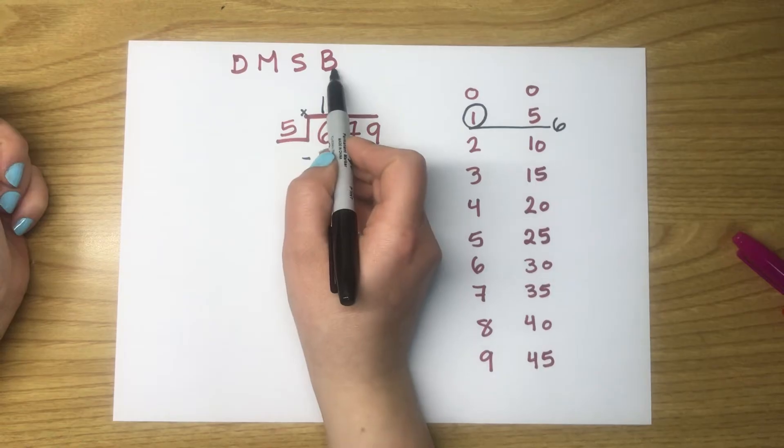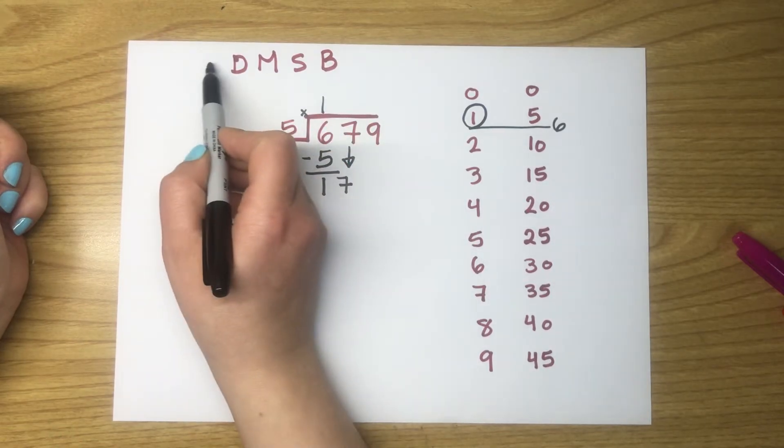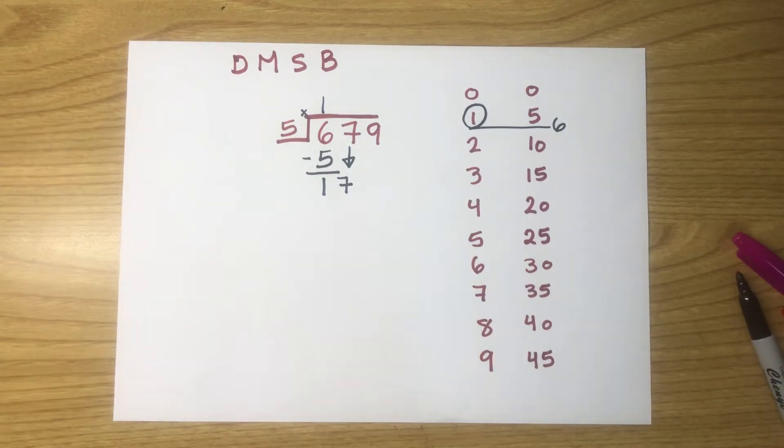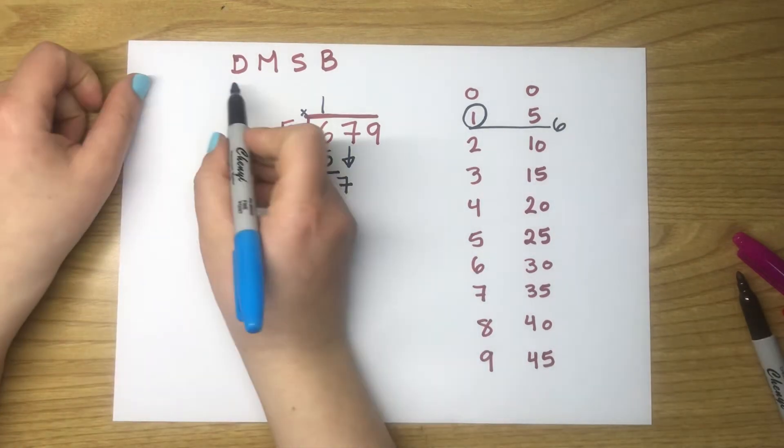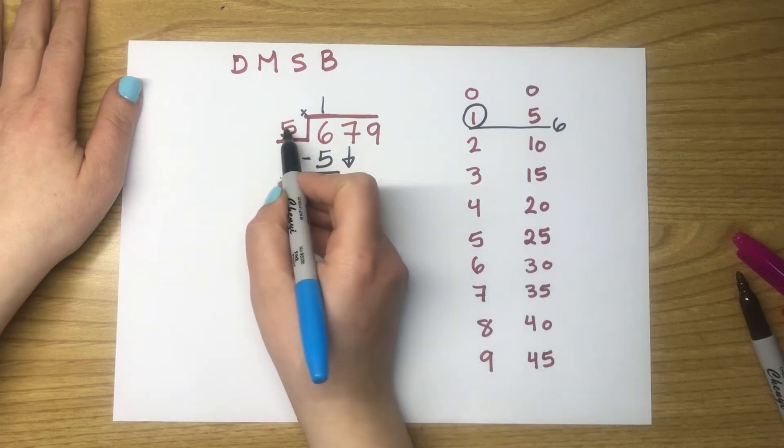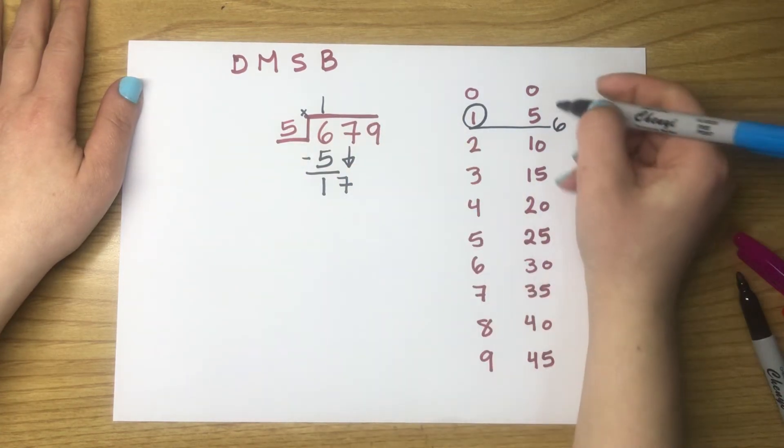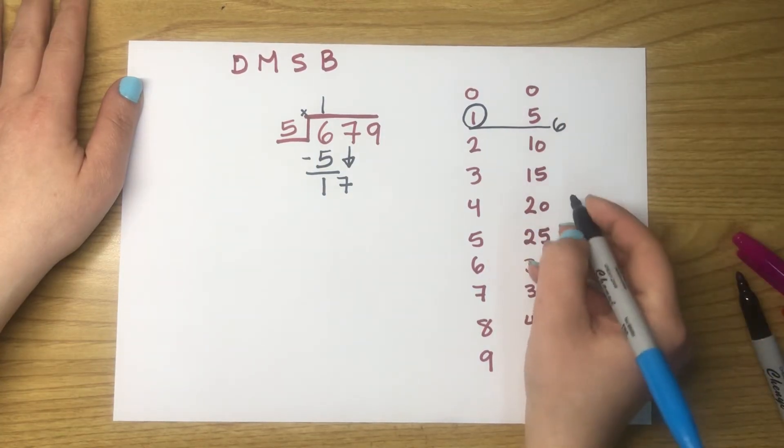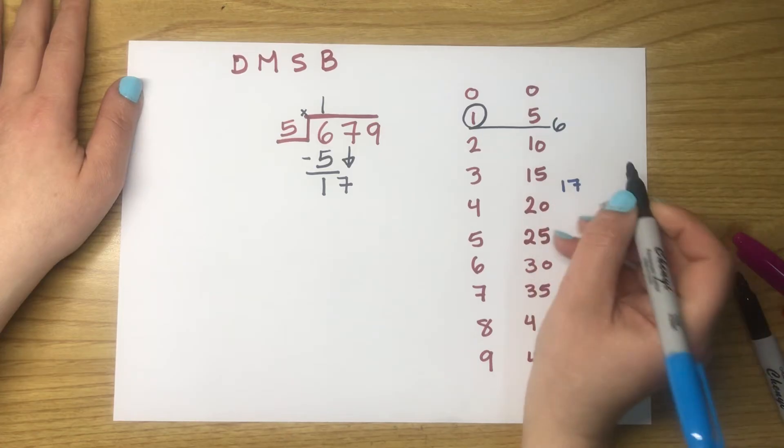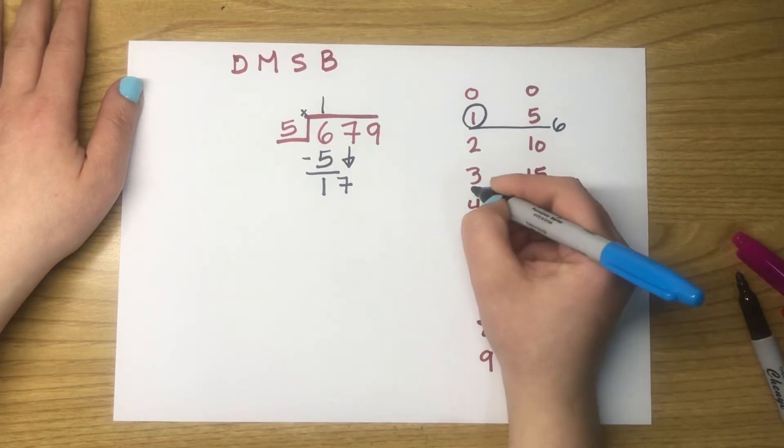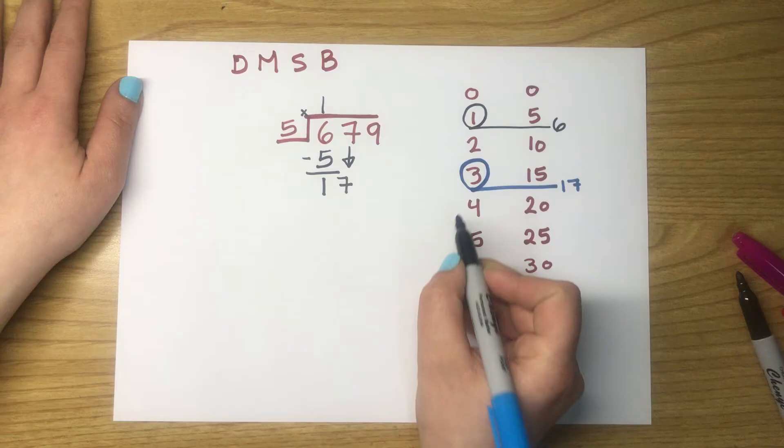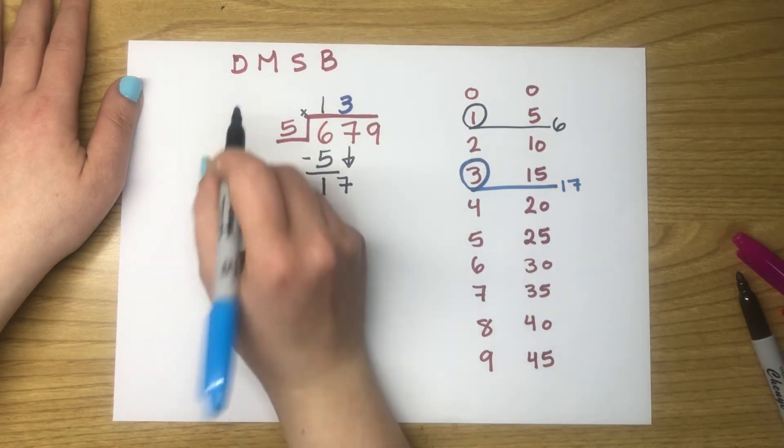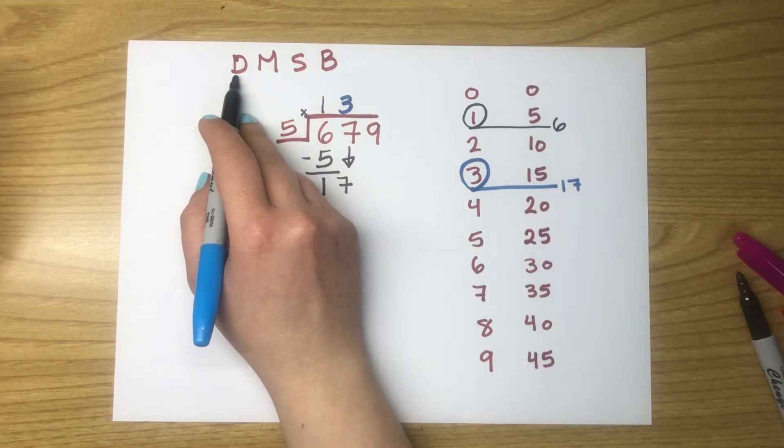So after bringing down the digit, we have to go back into division. Okay, I'm going to start with another color. Go back to divide. We are going to divide 17 by 5. Again, we have to look up the 17 here. The 17 is between 15 and 20. Here's 17. String. Bubble around 3. The 3 flies up on the top of 7. This is the division step.